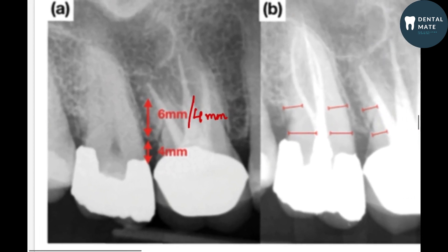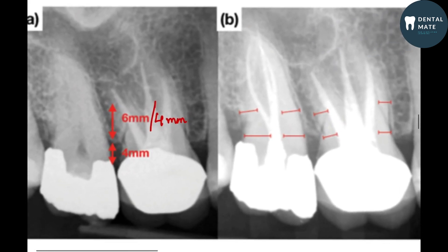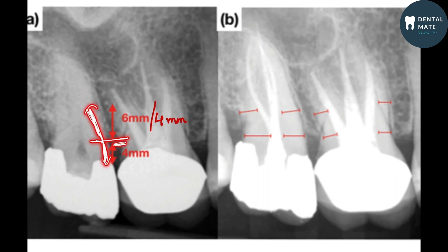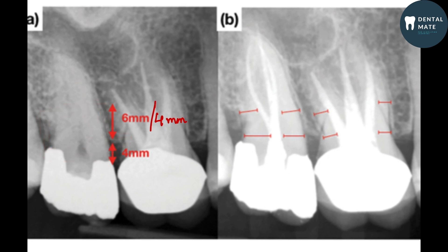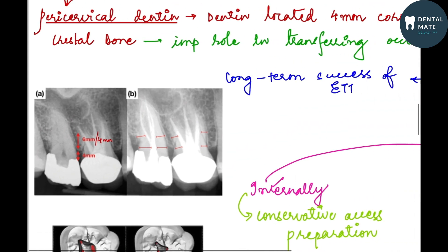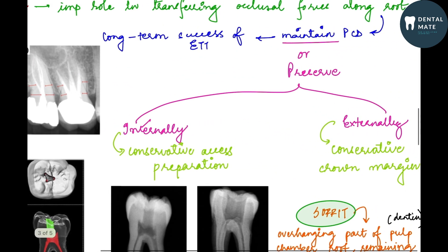Looking at this radiograph, this is the crestal bone and this is the tooth. So 4 mm of dentine which is above the crestal bone, and 4 to 6 mm of dentine which is below the crestal bone — this is the pericervical dentine. This dentine area is crucial for transferring the occlusal load to the root and dissipating all the occlusal forces.